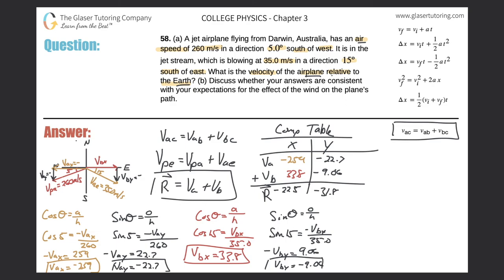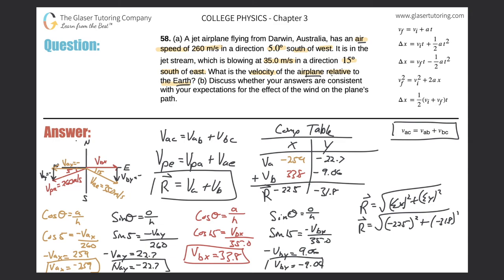To calculate the magnitude of the resultant vector, use the formula: resultant equals the square root of the sum of x components squared plus the sum of y components squared. Plugging in: square root of (negative 225)² plus (negative 31.8)². Make sure to use parentheses appropriately — there cannot be a negative sign under the radical. The result is 227 meters per second.